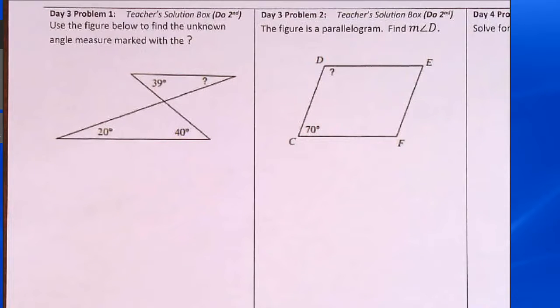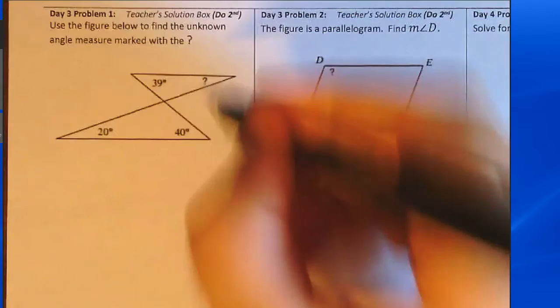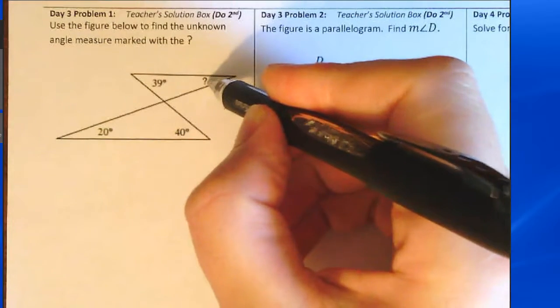Here's a solution for day three, problem one. Use the figure below to find the unknown angle measure marked with the question mark. So looking for this angle here.